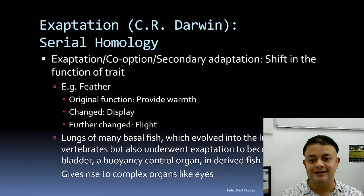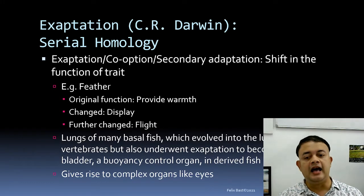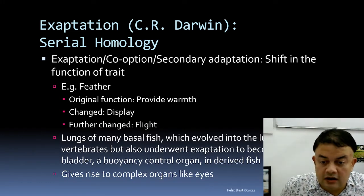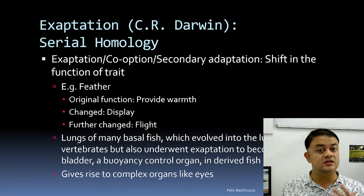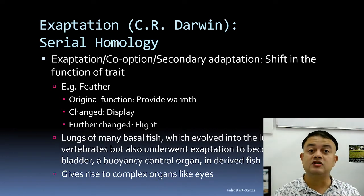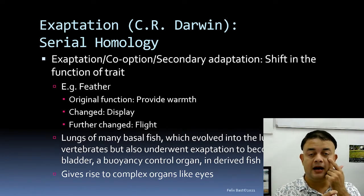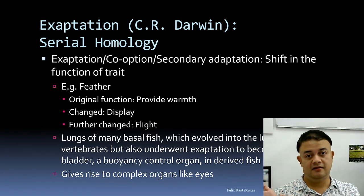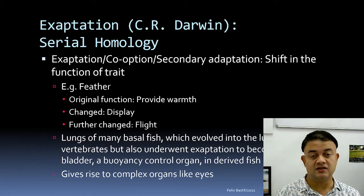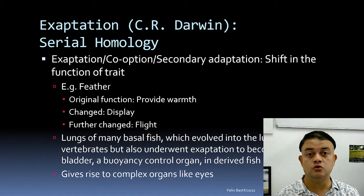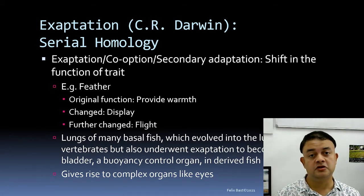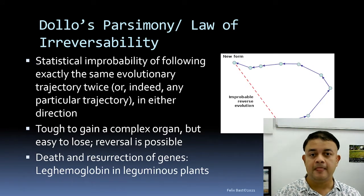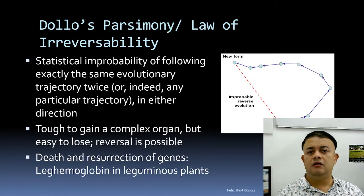Exaptation is the process that gives rise to complex organs like the eye, where function keeps on changing through serial homology. All complex organs can be traced through co-option. This process is very interesting in terms of evolutionary history.